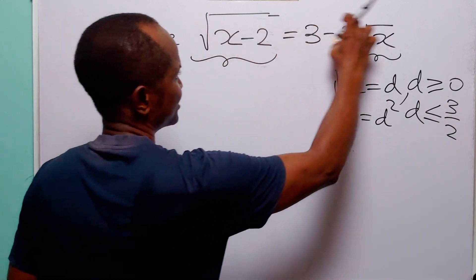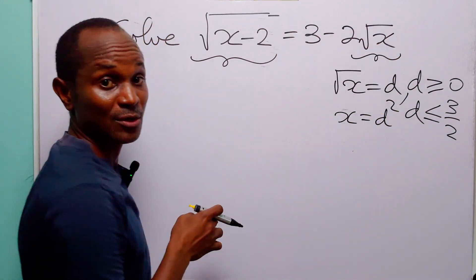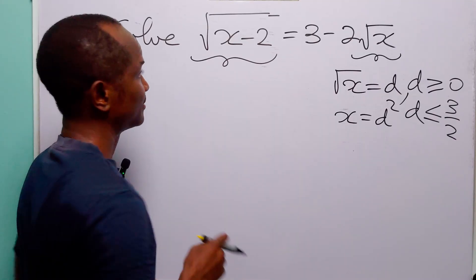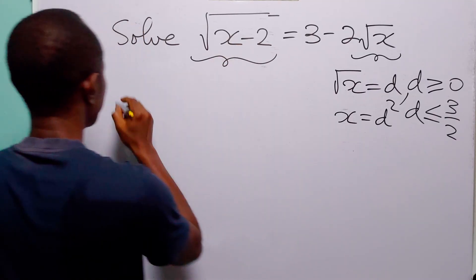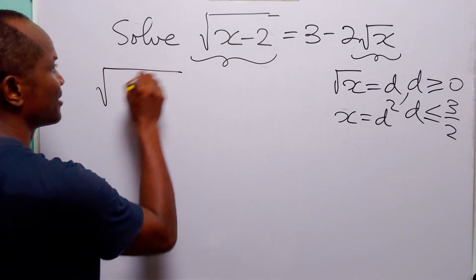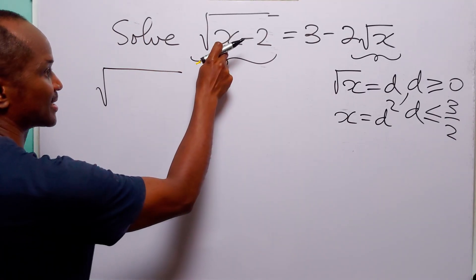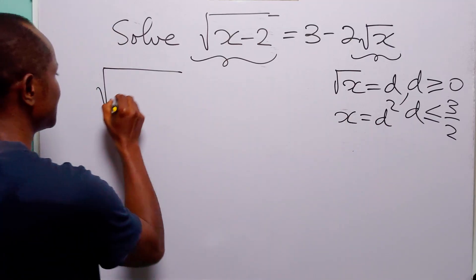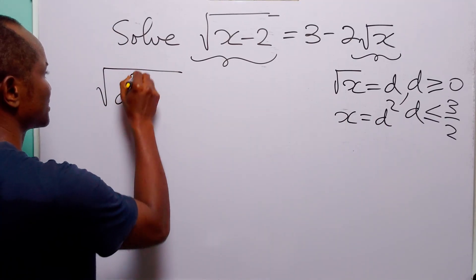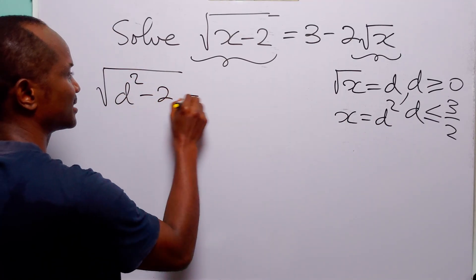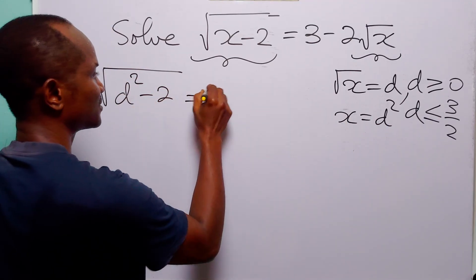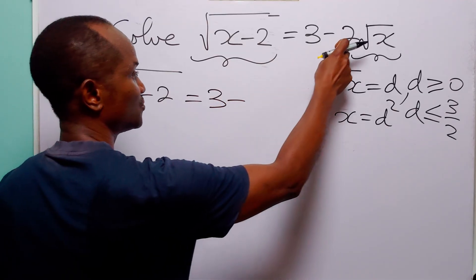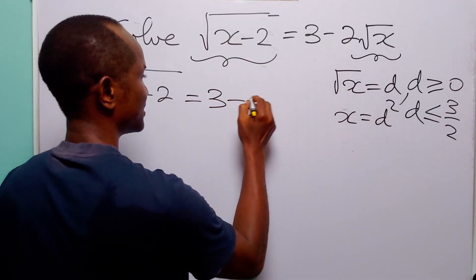Now let us rewrite the original equation in terms of d. So here we have the square root of x, which of course is d squared minus 2, and this is equal to 3 minus 2 times d.